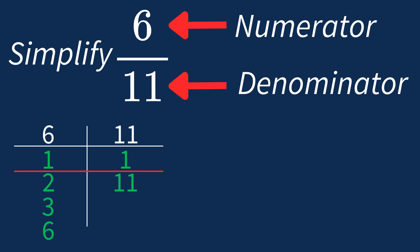Dividing the numerator 6 by 1 gives us 6. Dividing the denominator 11 by 1 gives us 11. So after dividing both the numerator and denominator by their greatest common factor of 1, we still end up with the same fraction, 6 over 11.